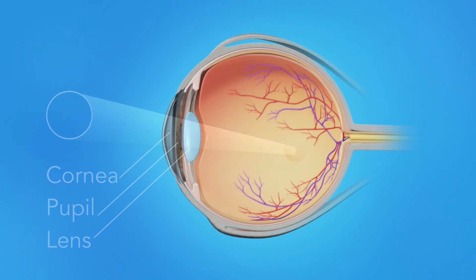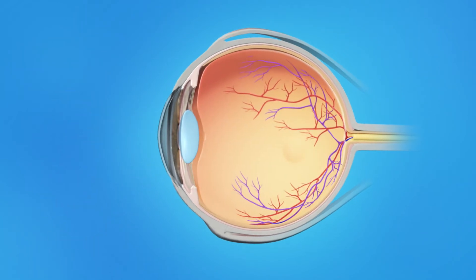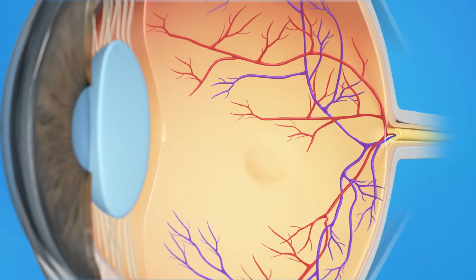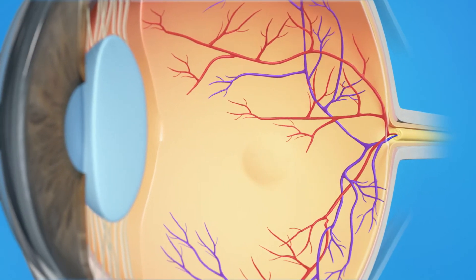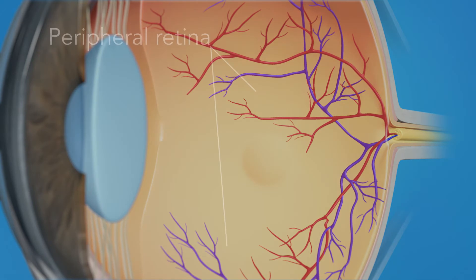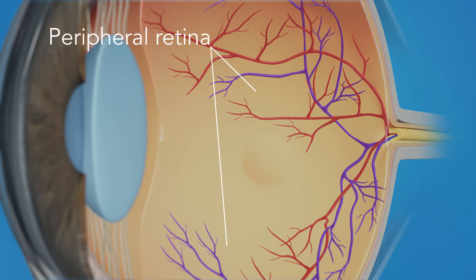These light rays are focused on the retina, the light-sensitive tissue lining the back of the eye. The retina has two areas: the peripheral retina, which gives us our side or wide-angle vision, and the macula, the small area at the center of the retina. The macula gives us our pinpoint vision, allowing us to see detail clearly.